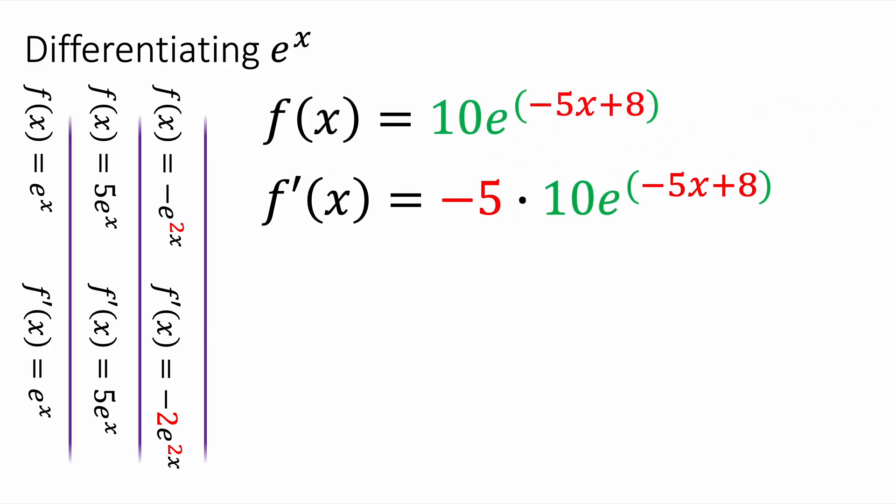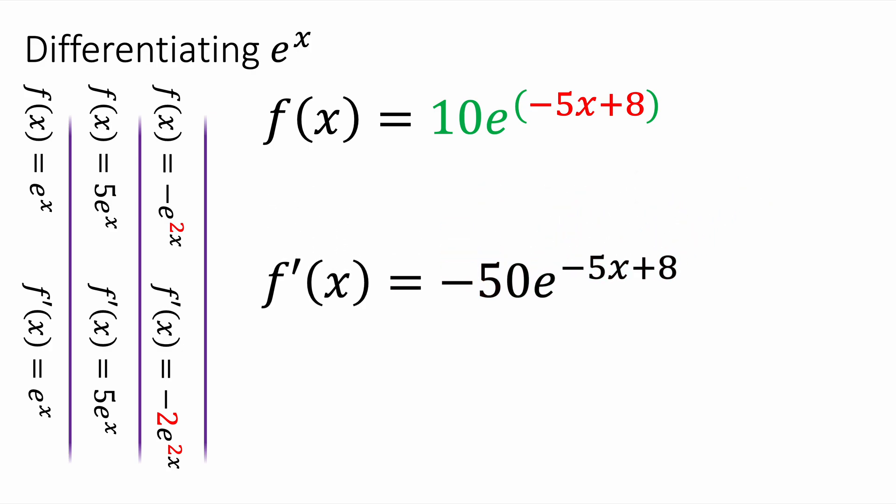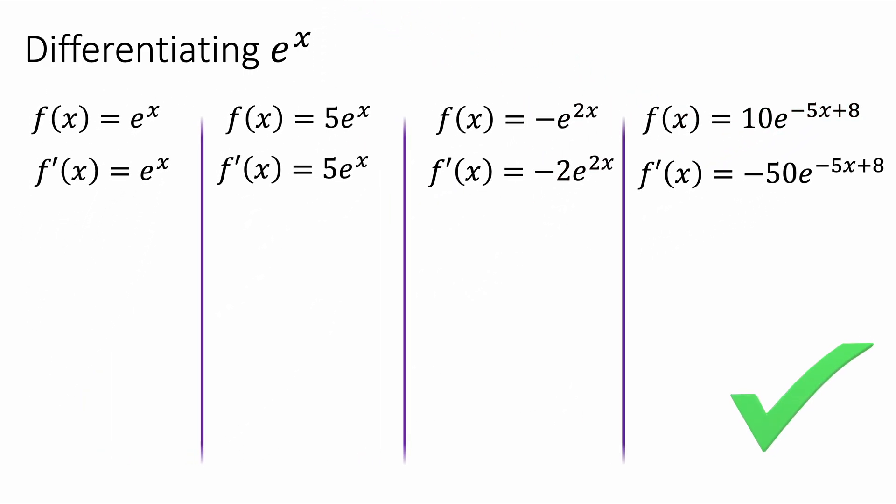And we differentiate the main function. The main function stays the same because it's just the power of e. All we do is multiply the main function by the minus 5, the derivative of the power. And we get minus 50 e to the minus 5x plus 8. All that's happened here is the derivative of the power has come down and it's multiplied with 10 in front. That is how you differentiate powers of e or exponential functions.